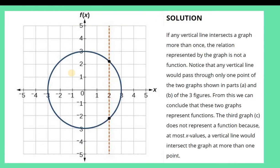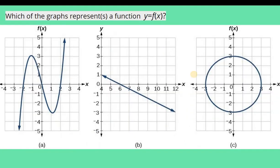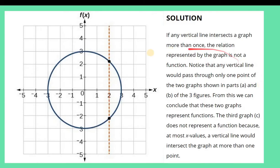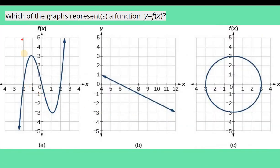According to the solution, the third graph, this one, is not a function. Because if we draw a vertical line, it would hit two points. If any vertical line intersects a graph more than once, the relation represented by the graph is not a function. So notice that any vertical line would pass to only one point of the two graphs shown in parts A and B.